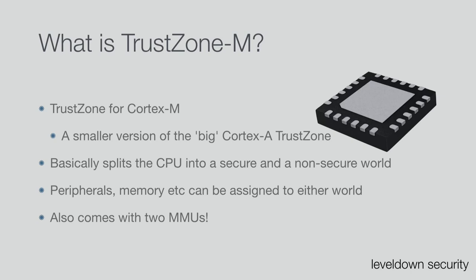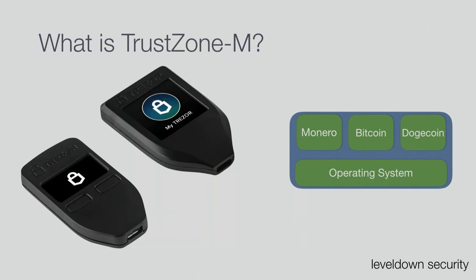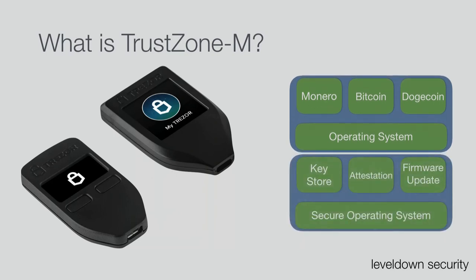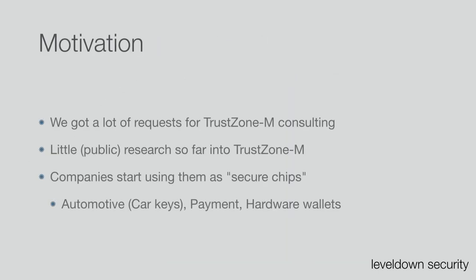It also comes with two MPUs. Last year we gave a talk on Bitcoin wallets — let's take those as an example. On a Bitcoin wallet you often have different apps, for example for Bitcoin, Dogecoin, or Monero, and underneath you have an operating system. The problem is this OS is very complex because it handles graphics rendering, and chances are high it gets compromised. With TrustZone you could have a second operating system, separated from your normal one, that handles all the important stuff like firmware update, key store, and attestation, reducing your attack surface.